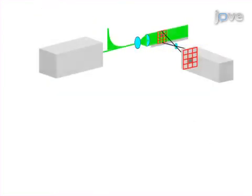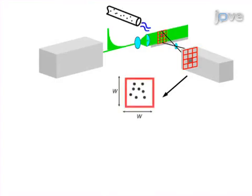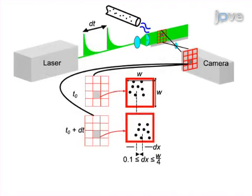The second step is to adjust the seeding density to achieve 8 to 10 particles per interrogation window. Next, adjust the camera frame rate and the time between laser pulses to achieve a particle shift between image pairs of less than one quarter of the interrogation window size.